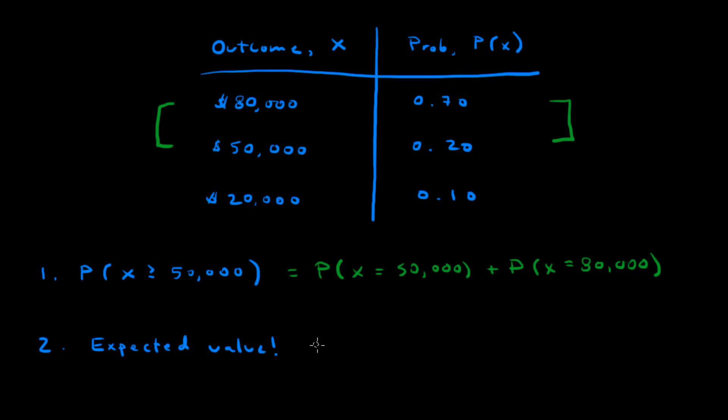So to calculate expected value, we have this formula: the expected value of X is the sum of X times the probability of X. What this formula means is that you take each possible outcome, multiply it by its probability, and then add them all together.